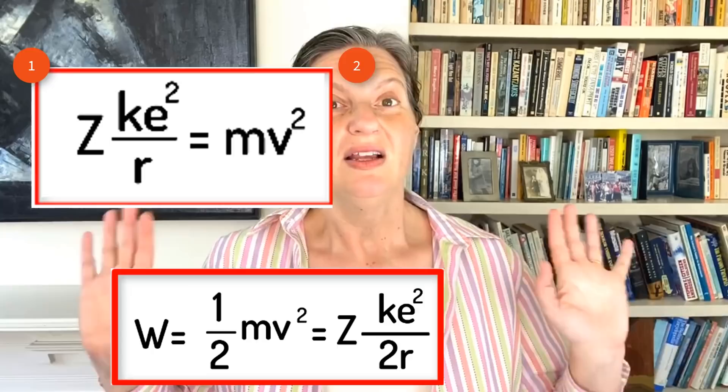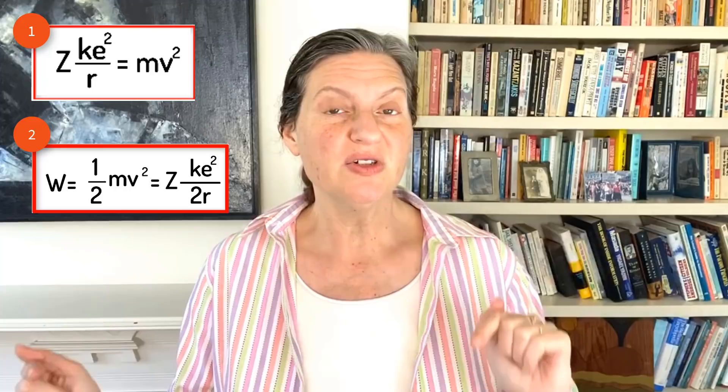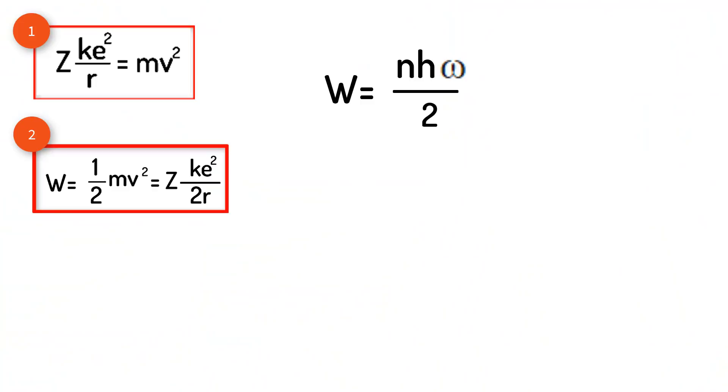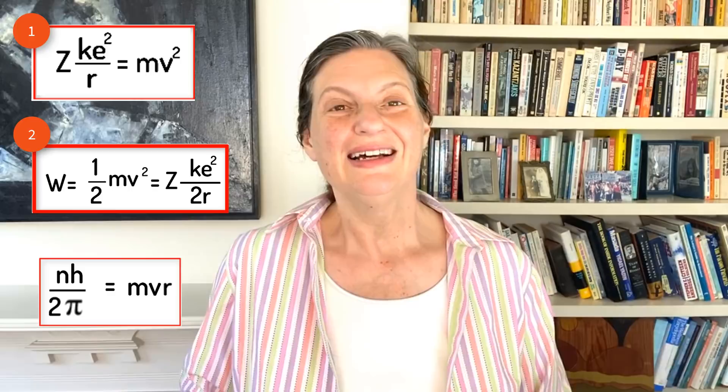As I said earlier, Bohr restricted his atom so that the work needed to remove an electron was quantized to equal nh omega over 2, where as I said before, n is an integer, h is Planck's constant, omega is the frequency of rotation. Plugging that into equation two and multiplying by two, we get that nh omega equals mv². Now we need an expression for omega, the frequency of rotation. If the electron is moving in a circle at a constant rate, then the velocity is distance over time where the distance is the circumference or 2πr, and the frequency is one over time. Dividing by 2πr we get that the frequency equals v over 2πr. Plugging that into the equation above and dividing by v and multiplying by r, you get that the classic angular momentum MVR equals nh over 2π. This is where most derivations start. Let's call that equation three.